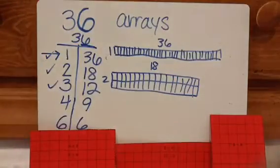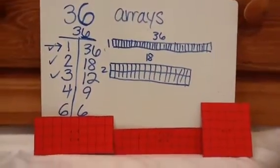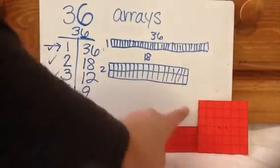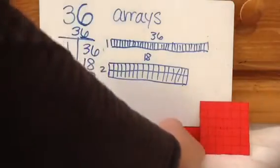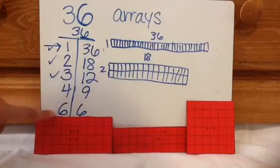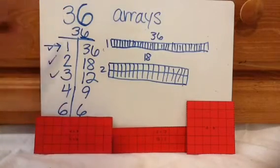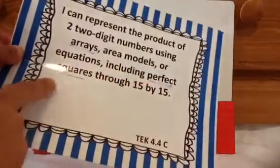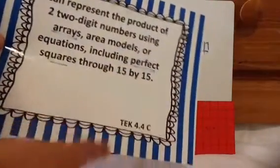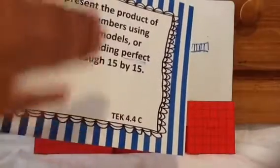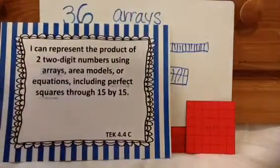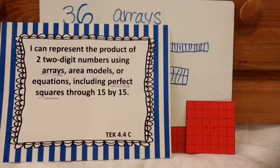So here is where the TEKS comes in. If you notice, these are all rectangular arrays, but this one is a square array — it's a six by six. Because it makes a square array, thirty-six is considered a square number. It makes a square array, it's considered a square number. So in your TEKS it says including perfect squares through fifteen by fifteen. They're talking about the eleven by eleven, twelve by twelve, thirteen by thirteen, fourteen by fourteen, fifteen by fifteen — representing it in arrays and area models.